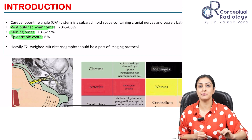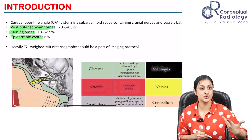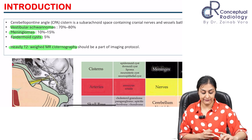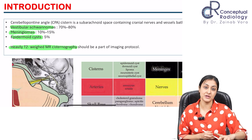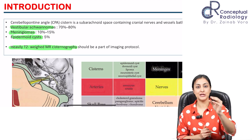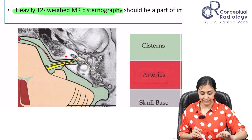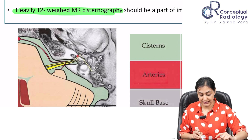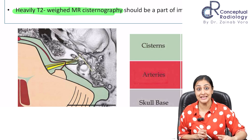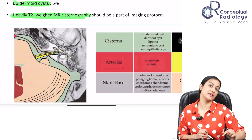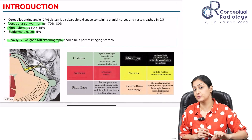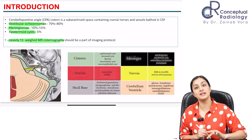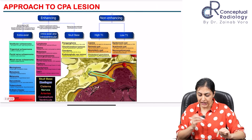Regarding protocol: it's a routine brain MRI protocol with high-resolution thin slices. Very importantly, always take a heavily T2-weighted CISS image — this is critical to evaluate extent, including extension into the internal auditory canal and into the inner ear. CISS should be part of the protocol for all CP angle cases, and that is probably the only variation from the standard MRI protocol.